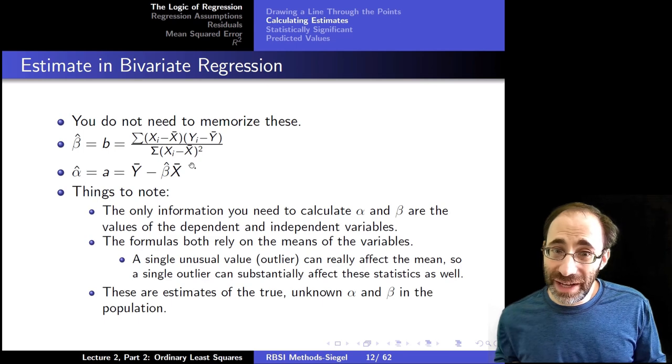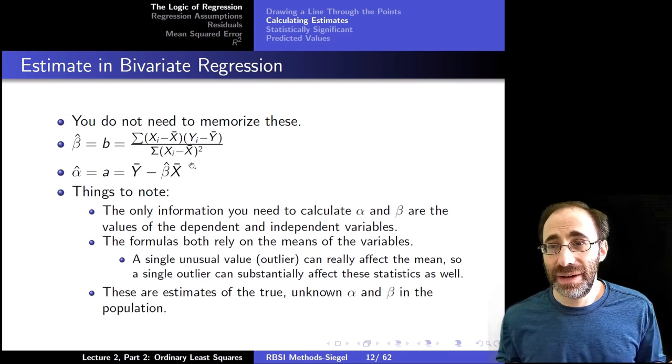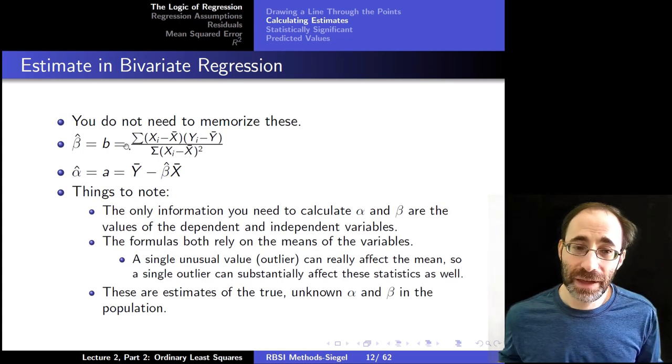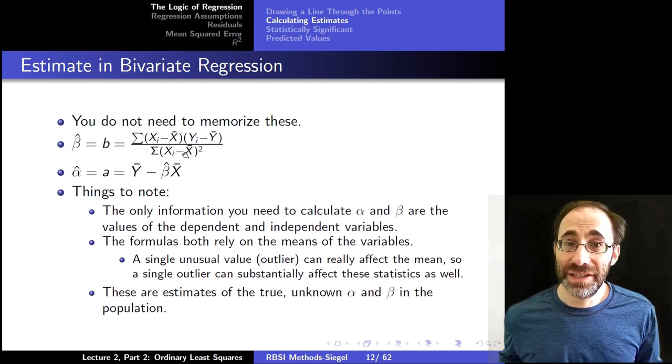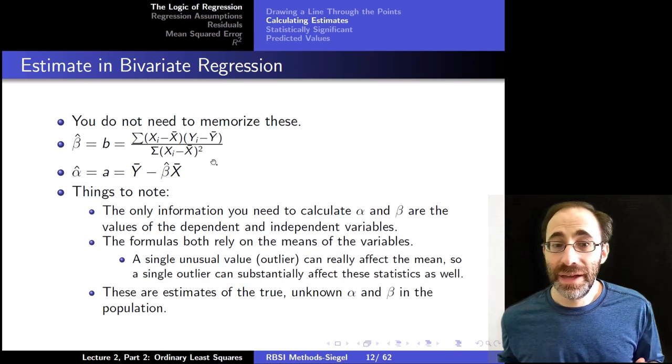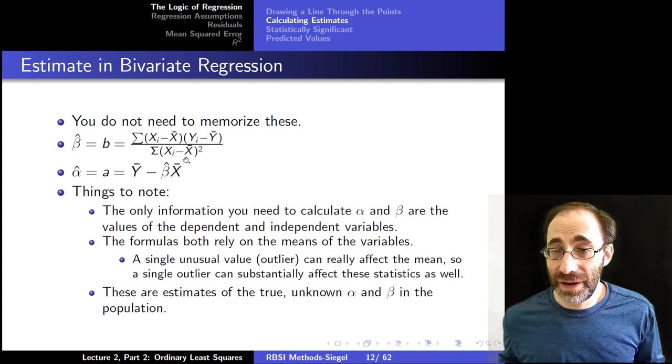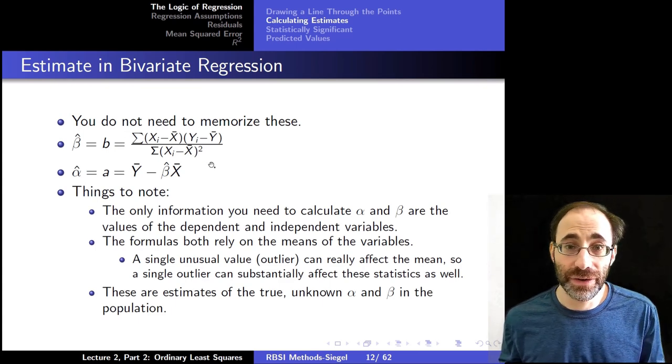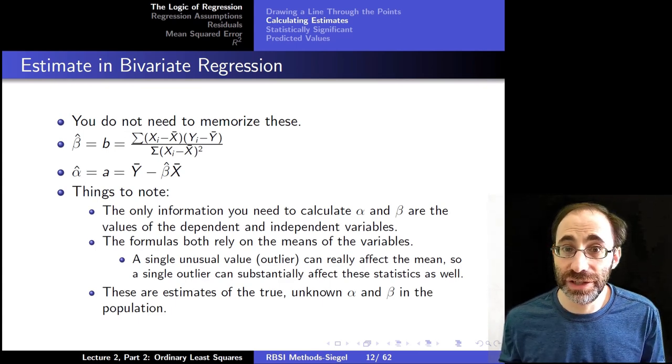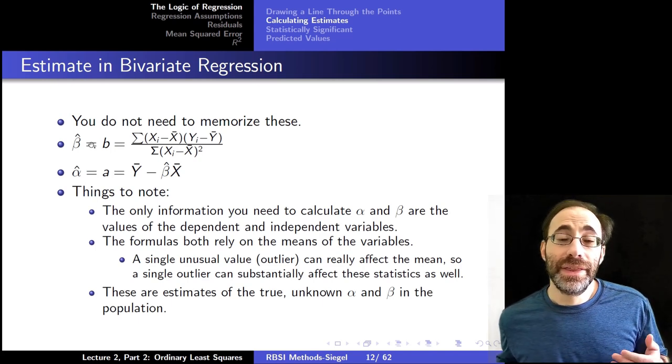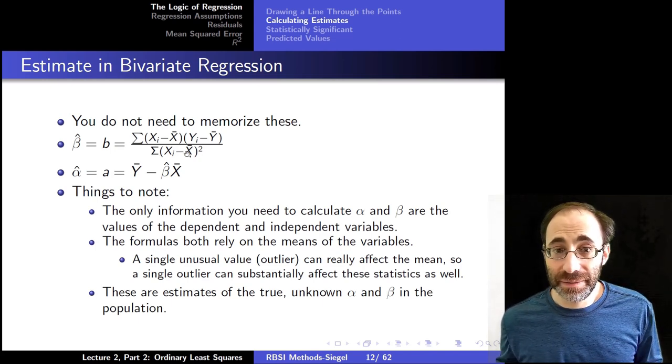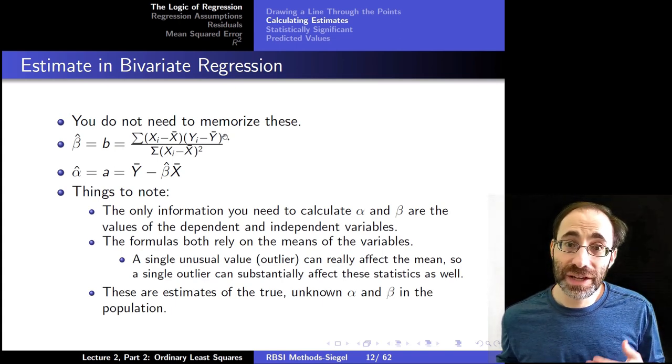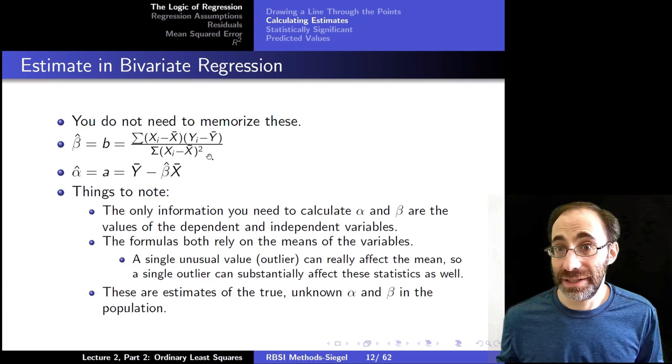The denominator normalizes it kind of like it does for the correlation, the bivariate correlation. The difference is in the bivariate correlation, it was the square root of the variance in X times the variance in Y. Here, it's just the variance, the squared error in X. So it's been normalized only by the squared deviations in X. You should get a sense that the numerator relates to the covariance between X and Y, and the denominator relates to the variance in X.